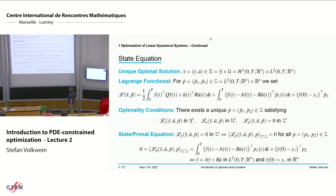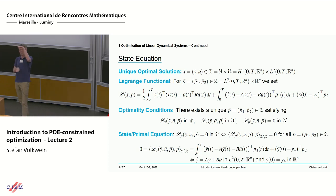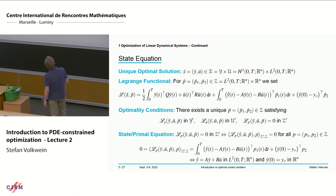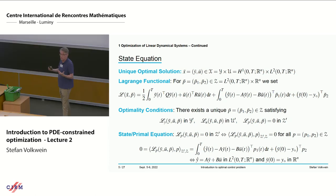In our case — linear ODE, quadratic cost — this is a quadratic problem, so there exists a unique solution. The state Y lives in H1(0,T; R^n), and the control is in L2(0,T; R^m). This L2 formulation means the ODE is satisfied for almost all T — some kind of weak formulation. So: Lagrangian. The first term is the quadratic cost, and the second is E(x) in the inner product with the P variable.